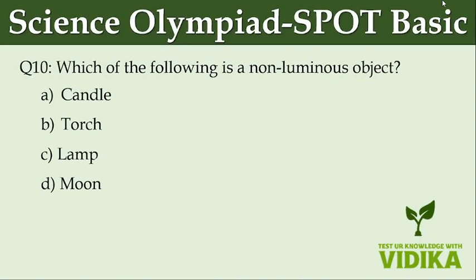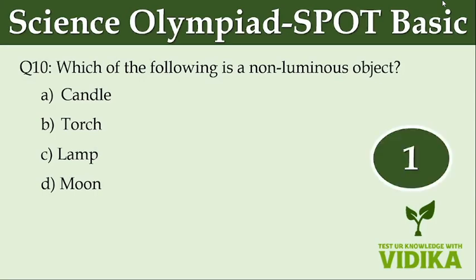Which of the following is a non-luminous object? Option A, candle. Option B, torch. Option C, lamp. Option D, moon.